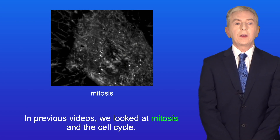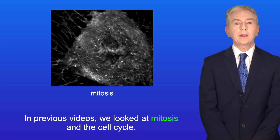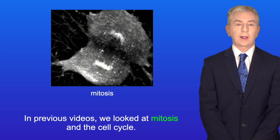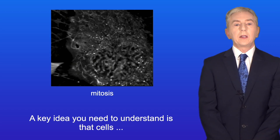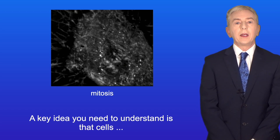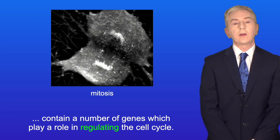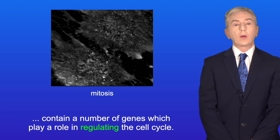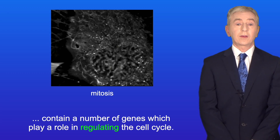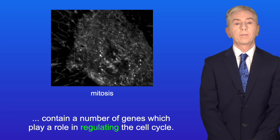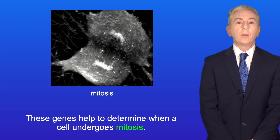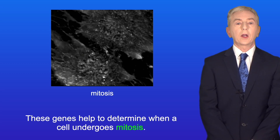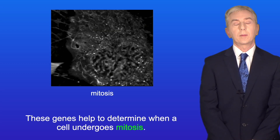In previous videos we looked at mitosis and the cell cycle. A key idea you need to understand is that cells contain a number of genes which play a role in regulating the cell cycle. These genes help to determine when a cell undergoes mitosis.